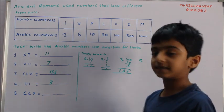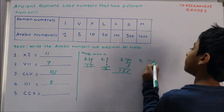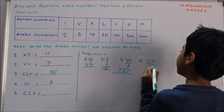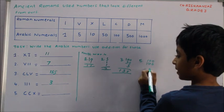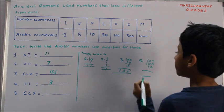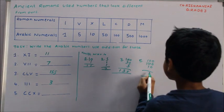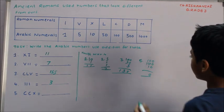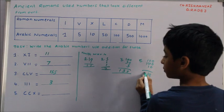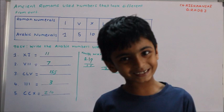CCCX — C means 100, and C means 100, and C means 100, and X means 10. Now we need to add: 100 plus 100 plus 100 plus 10 equals 310. Thanks for watching.